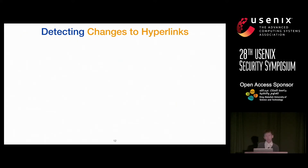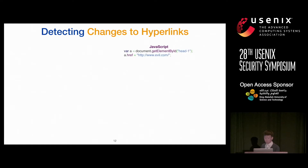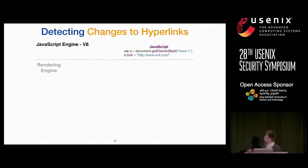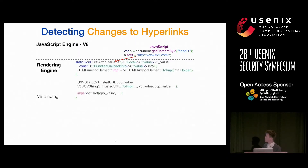Let me show an example of how we modified the Chrome browser to detect changes to hyperlinks. On the top right, we have sample JavaScript code to modify the href. It executes in the JavaScript engine — in Chrome's case, V8. When this line of code is executed, it invokes a method implemented in the V8 binding layer.